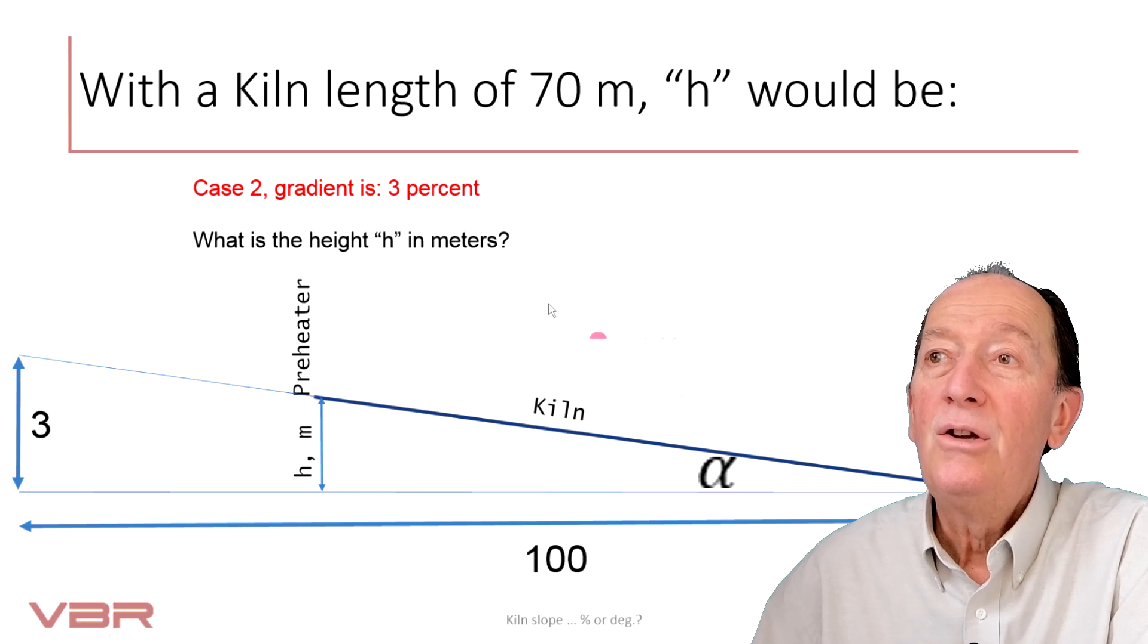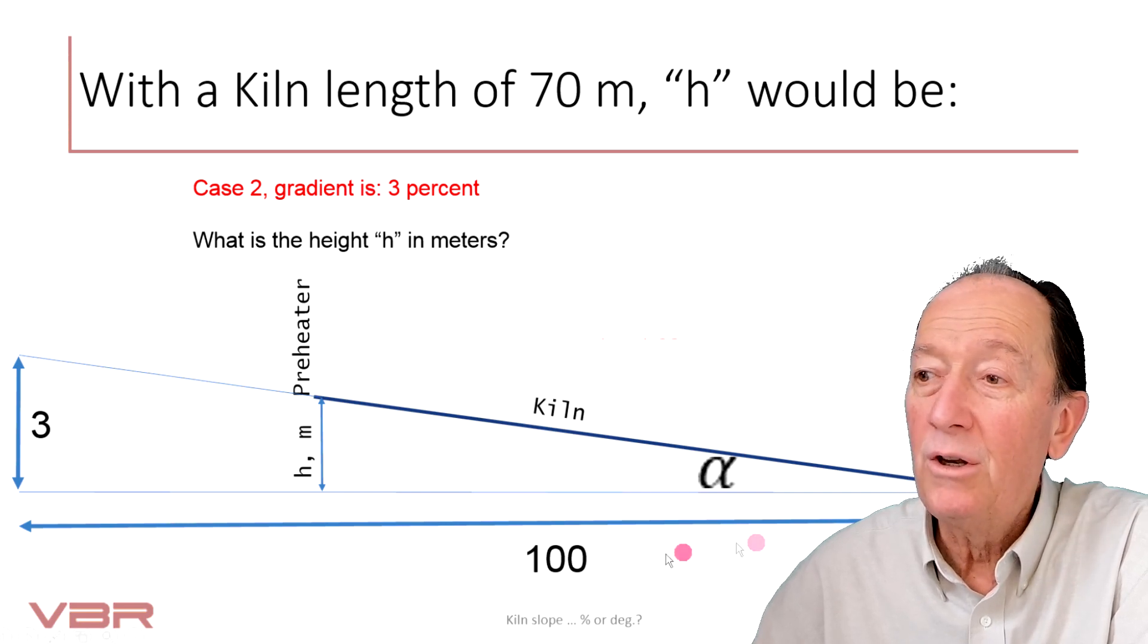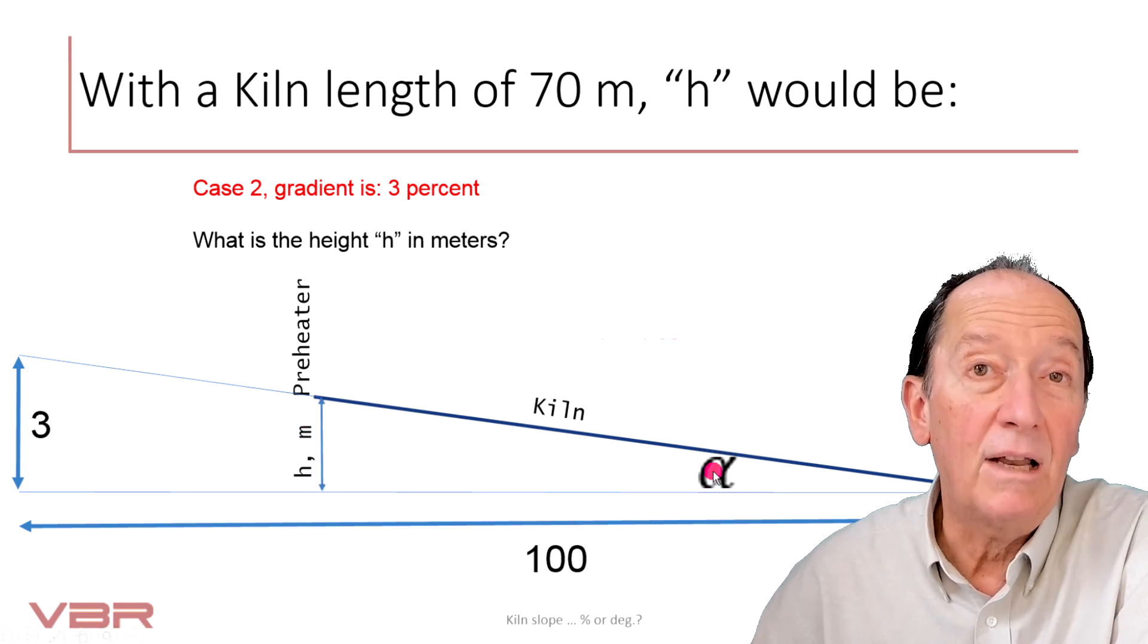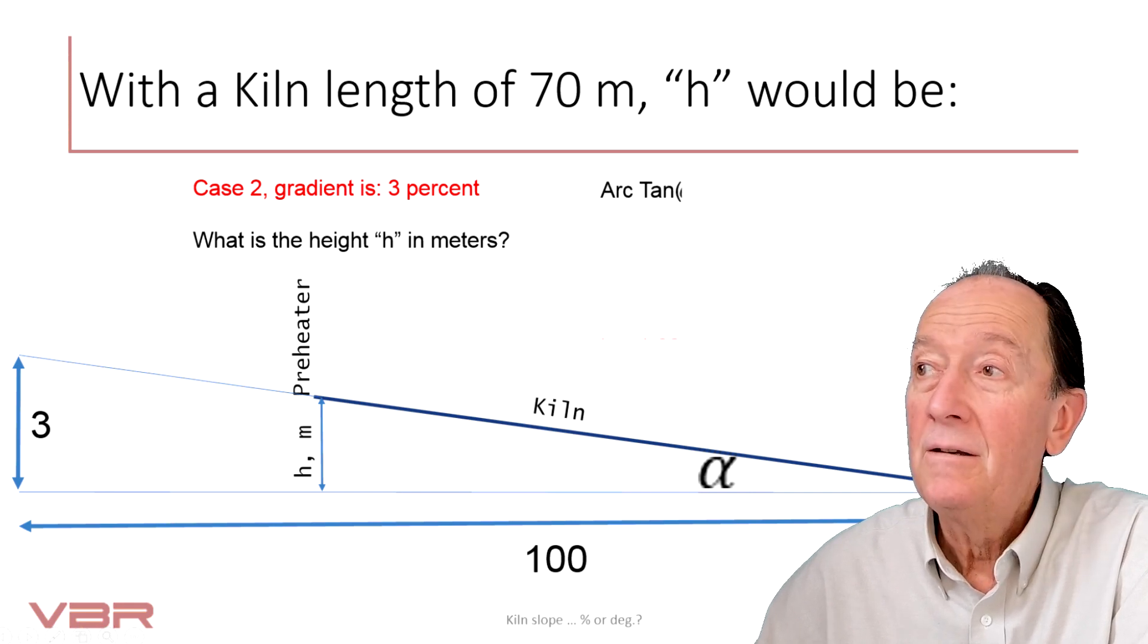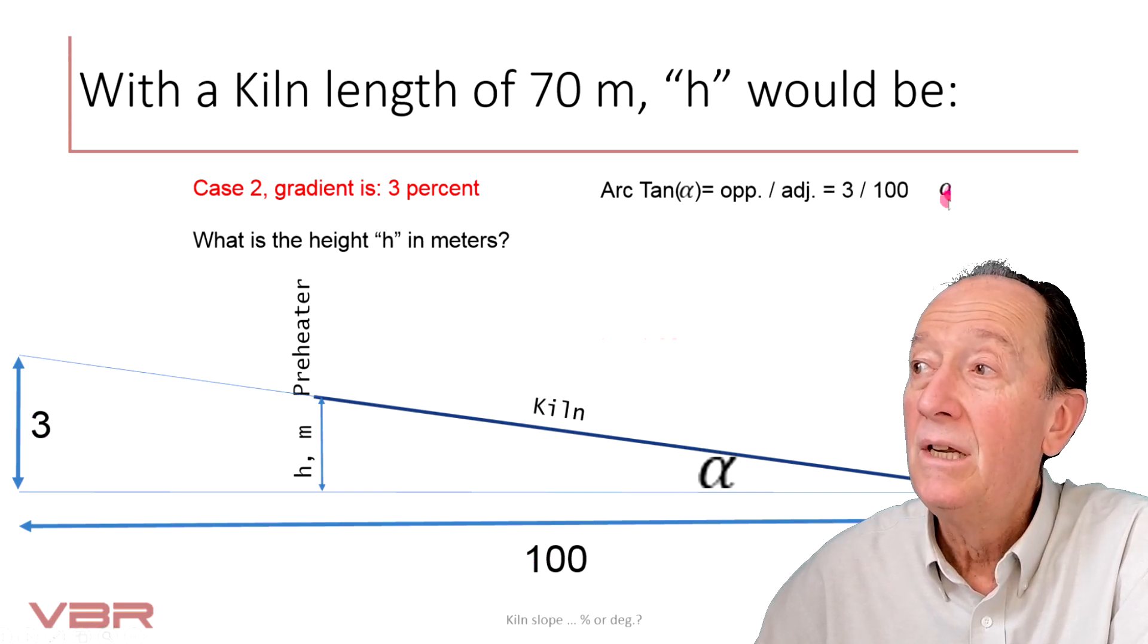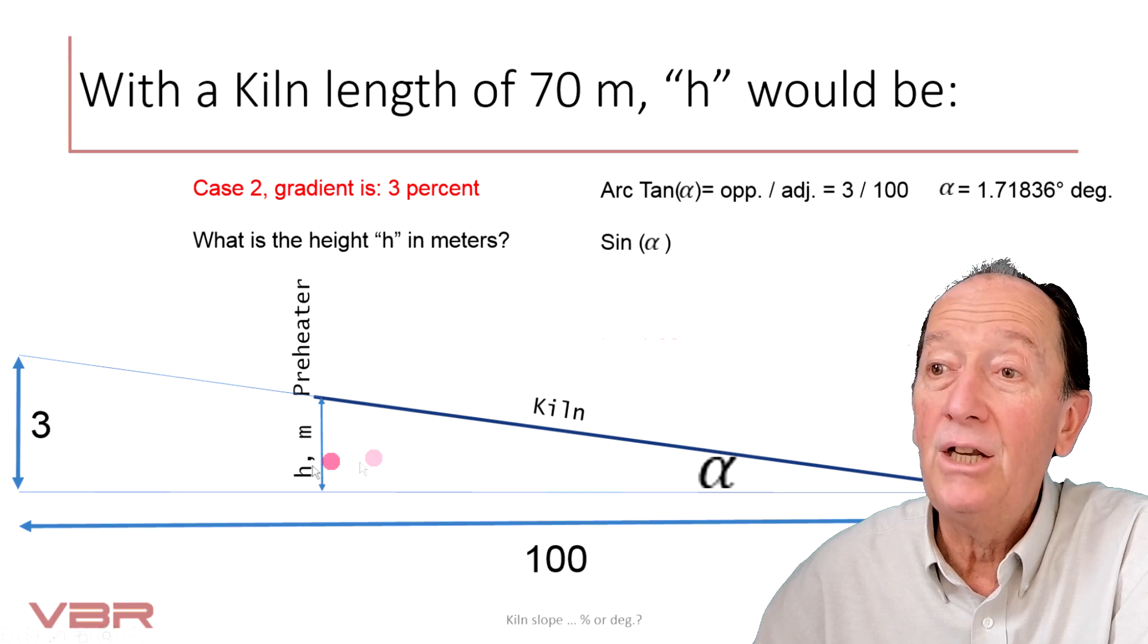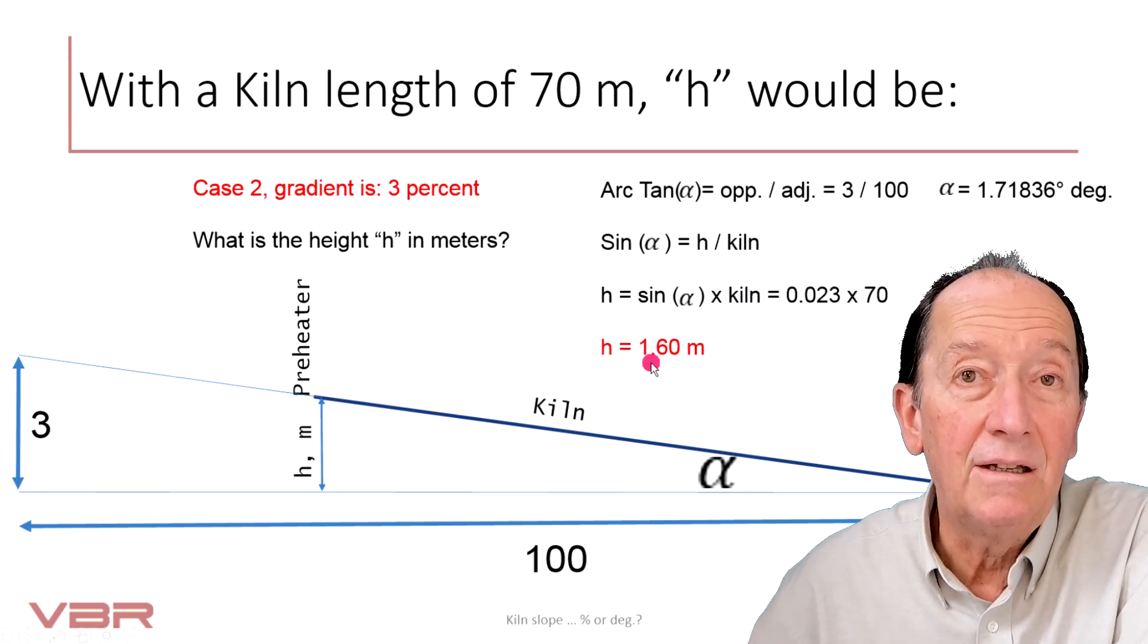Case number 2. The gradient is now 3%. So, what does this 3% mean? It means that over a distance of 100 meters, I will have an elevation of 3 meters. We still want to know what is the height of h. So, first step is to discover or to calculate what is the angle alpha. And to do this, I can work it out. The arctan α is opposite divided by adjacent. So, 3 divided by 100, alpha would be 1.72 degrees roughly. And then we can use the same formula as before. Sin α is equal to h divided by kiln. So, h would be sin α times kiln. So, h would be 1.60 meters. Sounds much more reasonable.